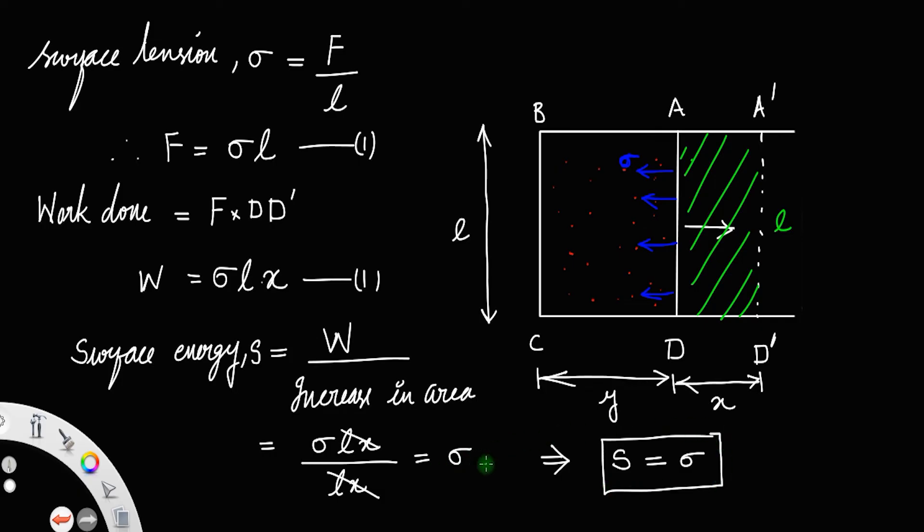That is the relationship between surface energy and surface tension. Surface tension is always numerically equal to surface energy. Actually, we have to multiply all these terms by two because there are two surfaces, but we just take the case of one film.